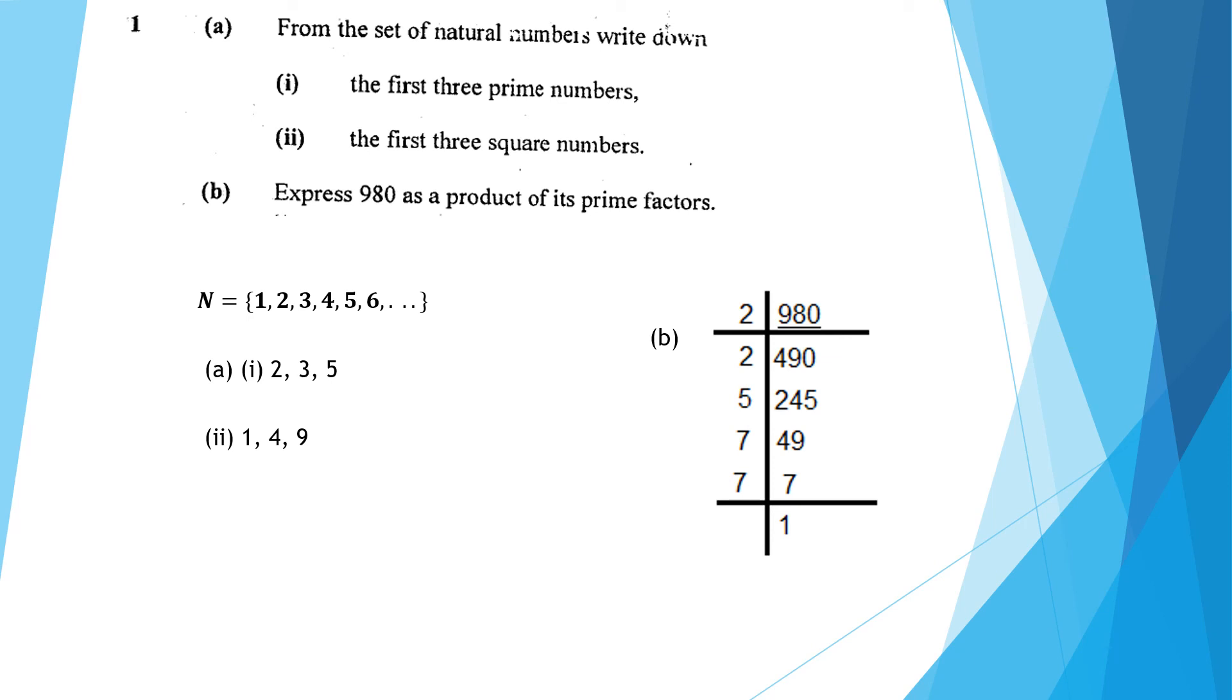From the left-hand side of the division tree, we have our prime factors. So 980 can be expressed as 2 times 2 times 5 times 7 times 7, or using exponents as 2 squared times 5 times 7 squared.